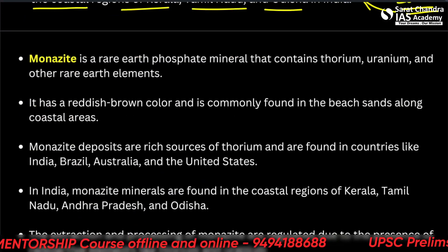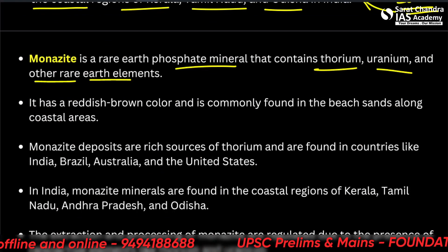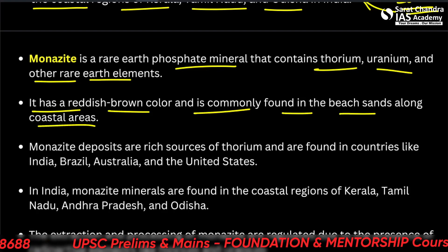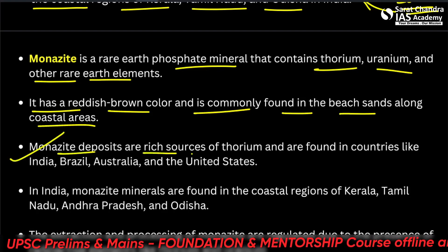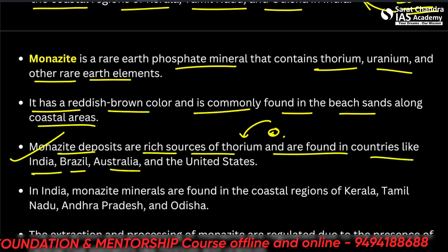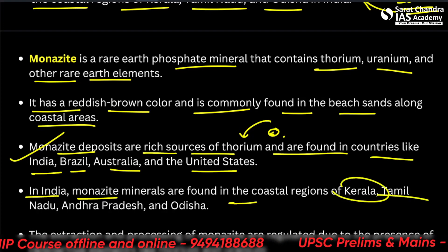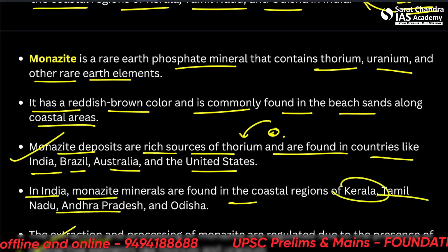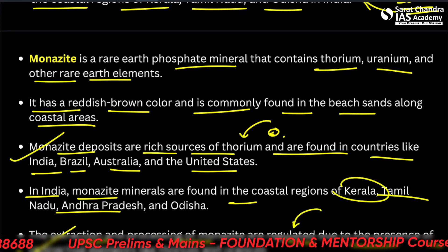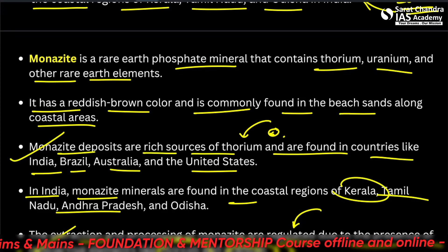Monazite is a rare earth phosphate mineral that contains thorium, uranium, and other rare earth elements. It has a reddish-brown color and is commonly found in beach sands along coastal areas. Monazite deposits are rich sources of thorium and are found in countries like India, Brazil, Australia, and the United States. In India, monazite minerals are found in the coastal regions of Kerala and Tamil Nadu. The extraction and processing of monazite are regulated by government entities due to the presence of radioactive elements like thorium and uranium — this also came as a statement in the question.